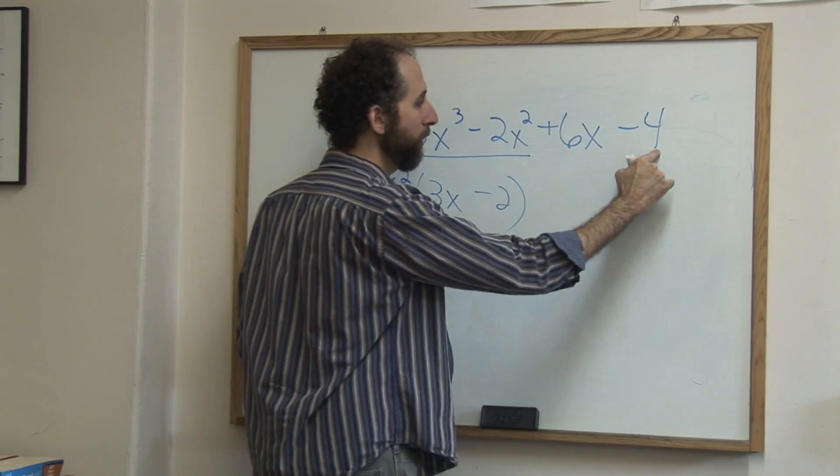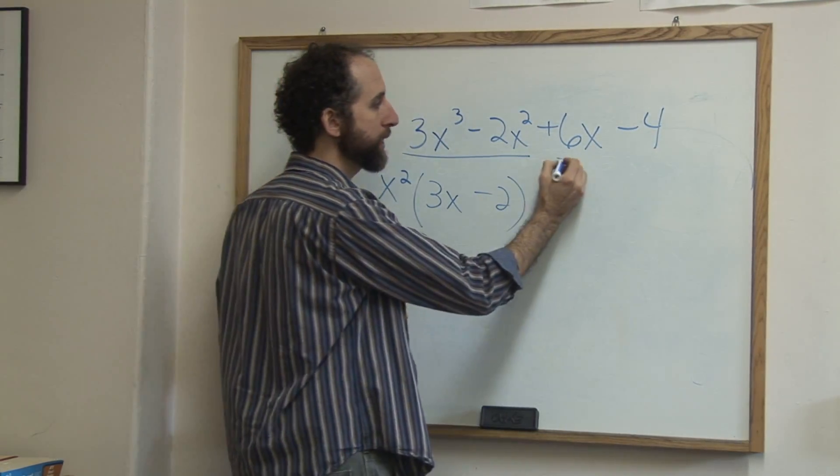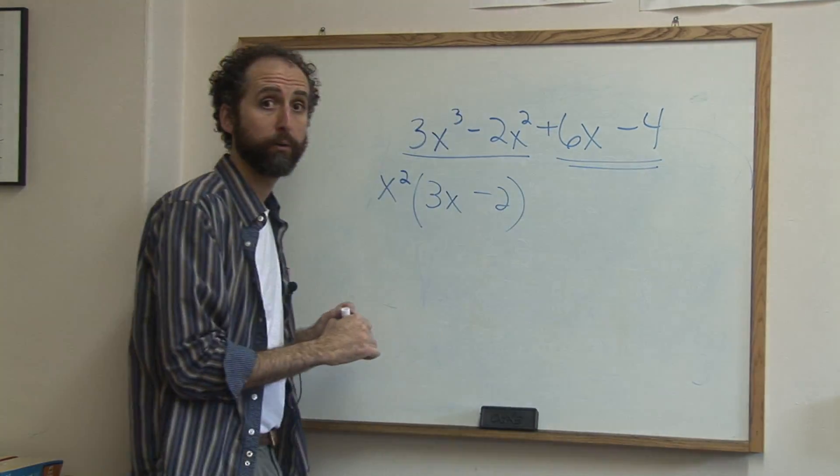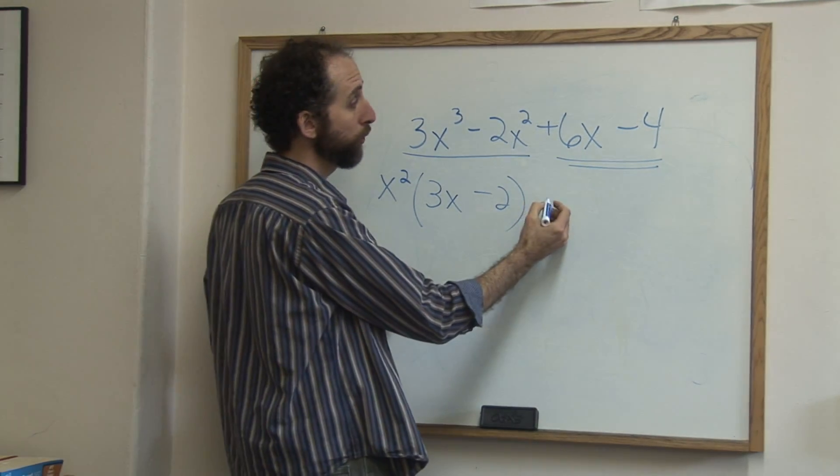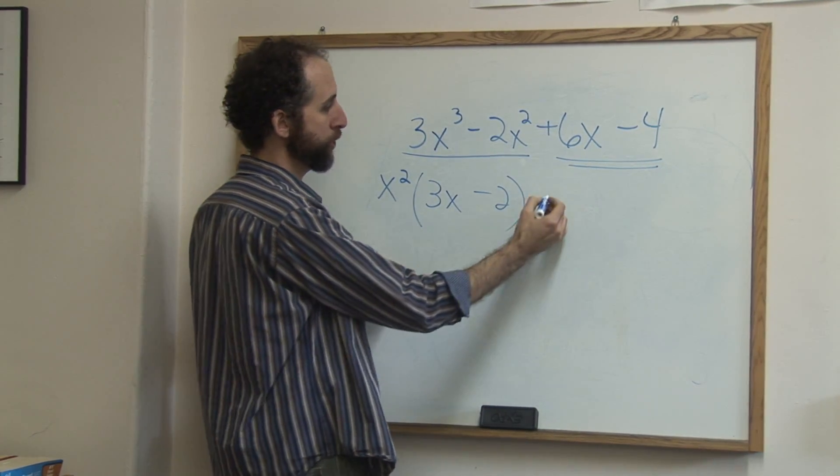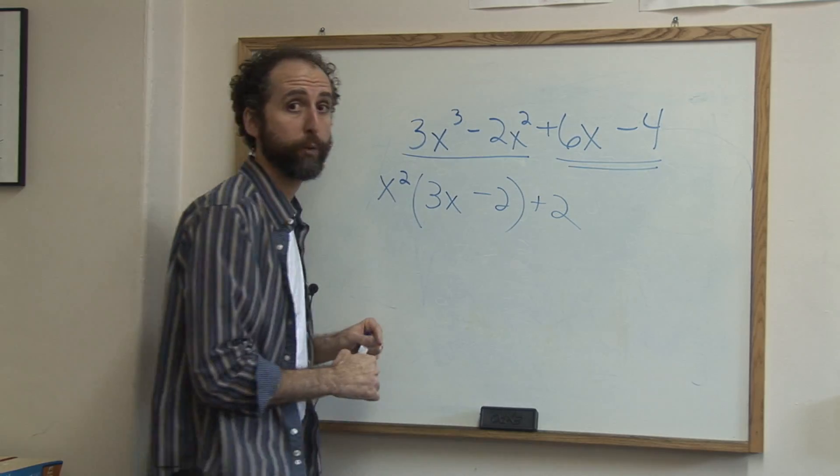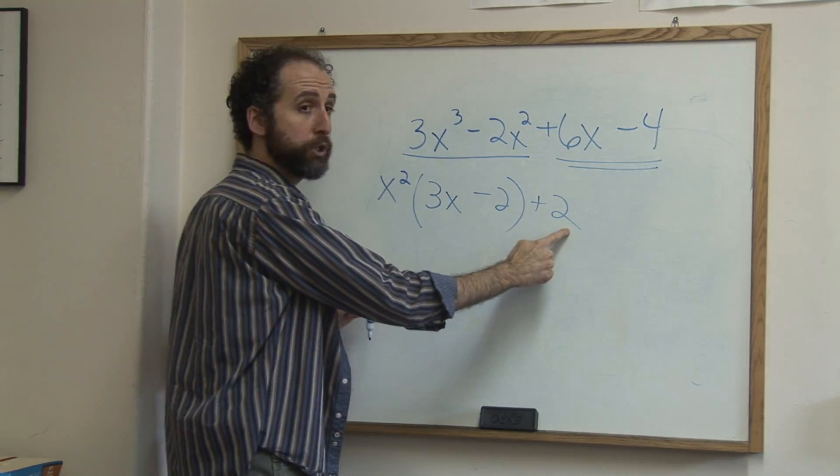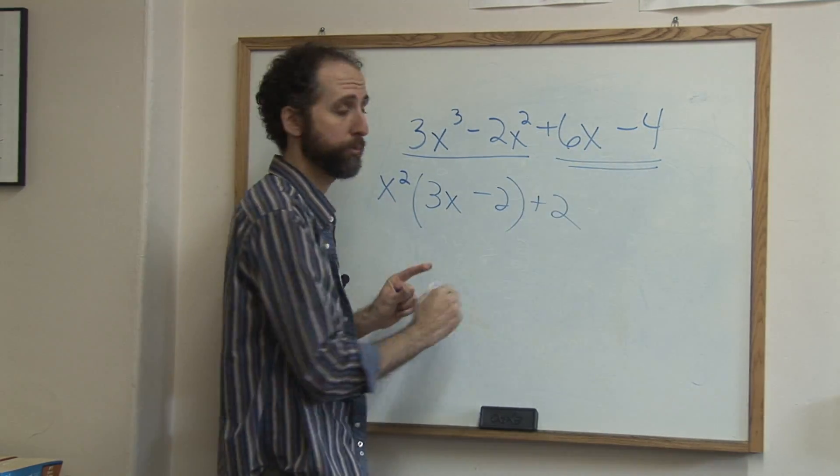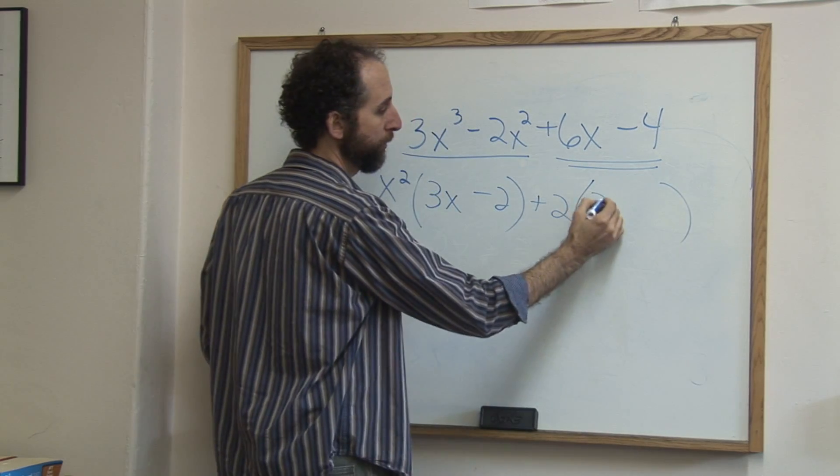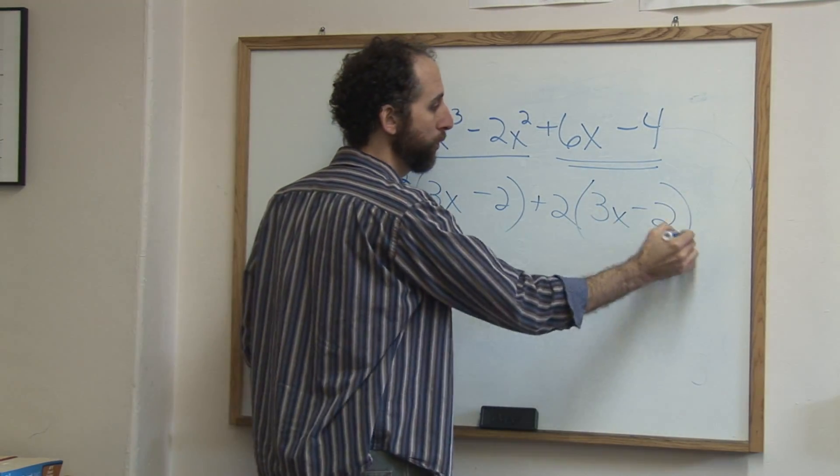Now I'm going to do the same for here. And the greatest common factor of this part is actually going to be 2. So I'm going to pull out a positive 2 from each of these two terms. That leaves me with 3x minus 2.